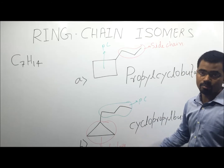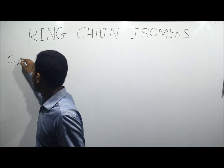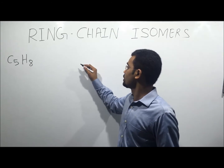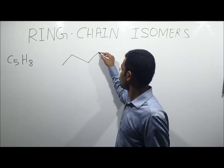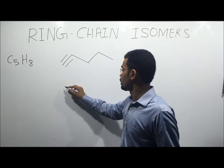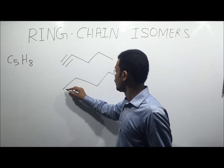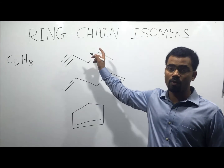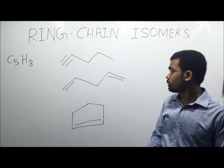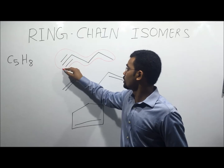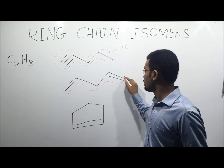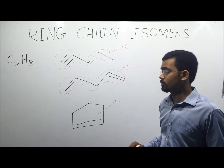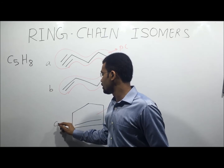Let us take another example with molecular formula C5H8. We are going to draw some structures. The first structure and another structure and a last structure are drawn. The parent chain of the first structure is an open chain, the second structure also has an open chain as the parent chain, and the third structure has a closed chain as the parent chain.